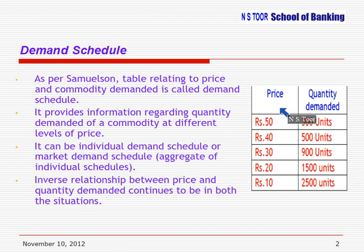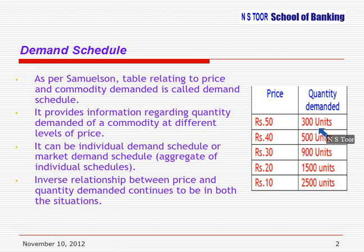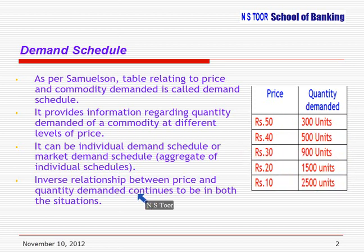Another important observation we make from this schedule: there is an opposite, or inverse, relationship between price and quantity demanded. When price is declining, quantity demanded is increasing. And when price is increasing, the demand is declining. So there is an inverse relationship between price and quantity demanded, and it holds for both individual demand schedules and market demand schedules.